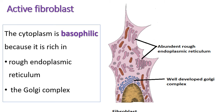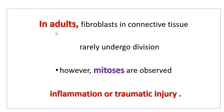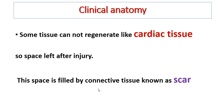In adult connective tissue, fibroblasts rarely undergo mitotic division, but mitosis is observed during inflammation and traumatic injury. As a clinical note, some tissues cannot regenerate — like cardiac tissue — so after injury of cardiac tissue, the empty space left is filled by scar tissue.